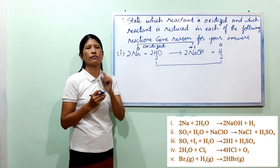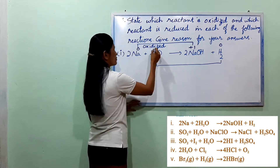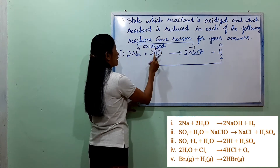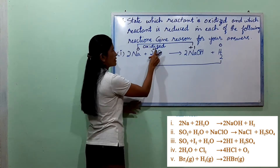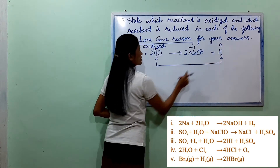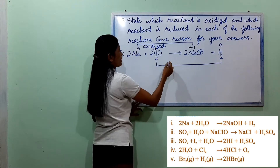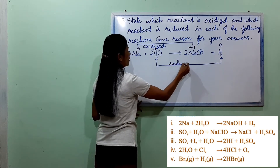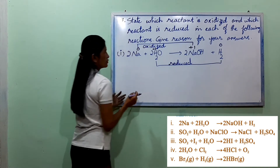If you want to add hydrogen, H2 is +1 in one compound, and H2 is -1 in another. So H2 is reduced.